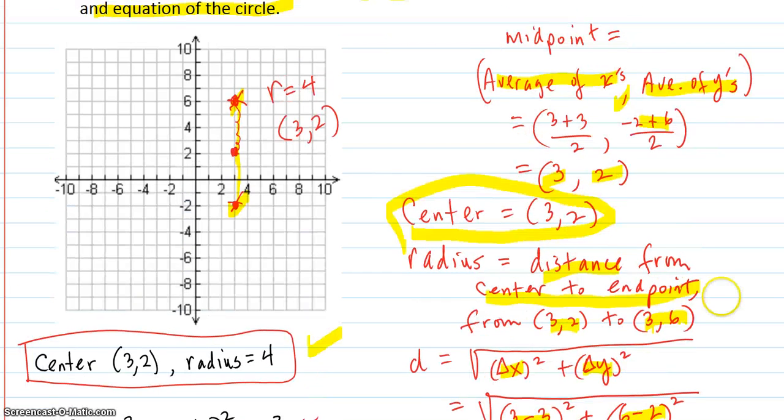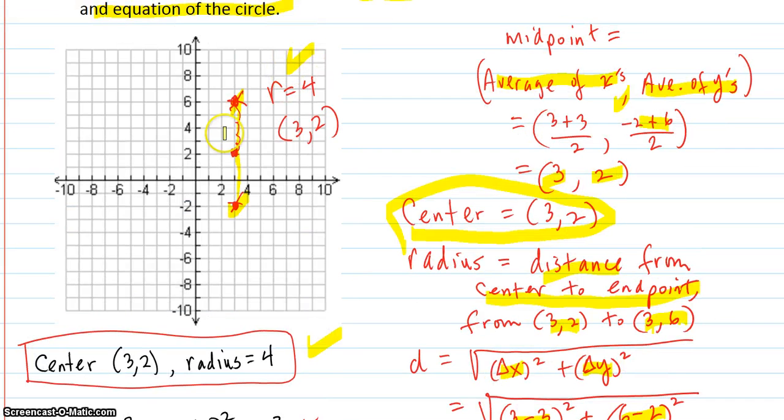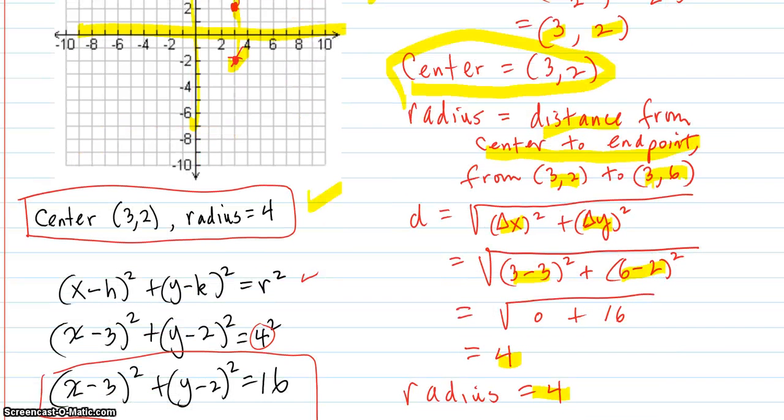And now that checks out with what we had. So you either easily eyeball it off of a graph, where you draw a quick axis, plot some quick points, and then count up and down or left and right. That's going to work, I think, for most of these problems. But if you get into a situation where you can't eyeball it, then you go this way.